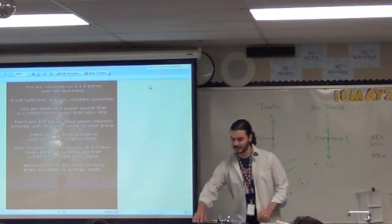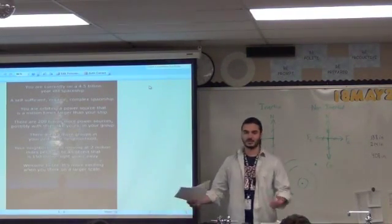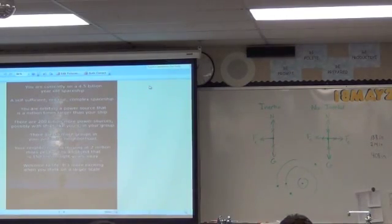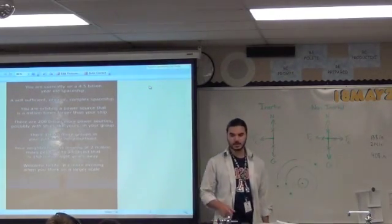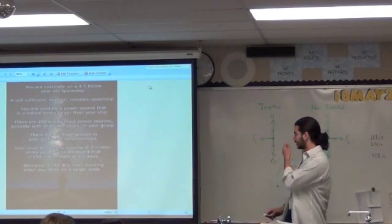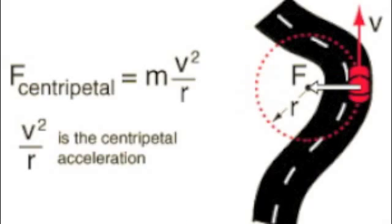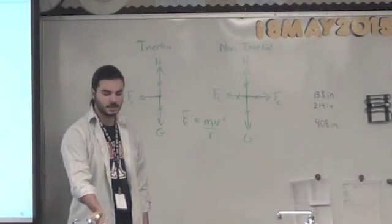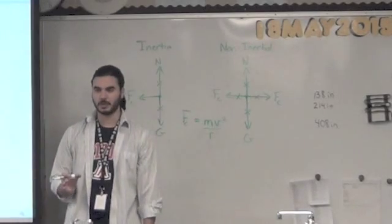Let's get to the assignments and some of the calculations so you can figure this kind of thing out for yourself. You need some equations to be able to do this. The equation for centripetal force is mass times velocity squared divided by the radius: F = mv²/r.